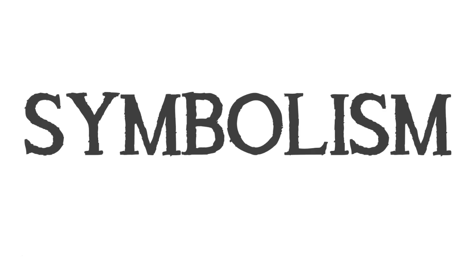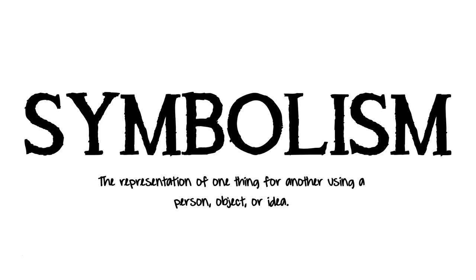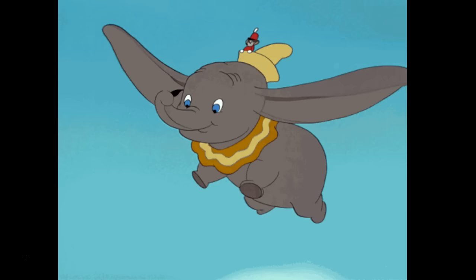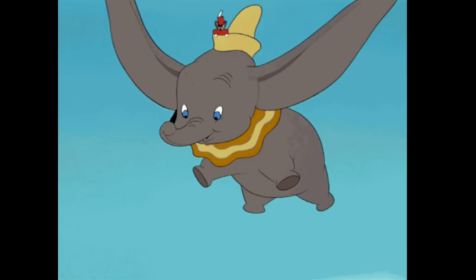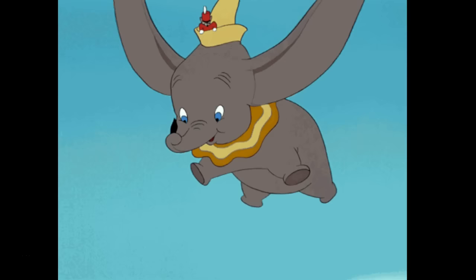Symbolism is something that at this point you probably know very well. When an author uses a symbol in a story, they're using an object to represent something else. We have symbols in our everyday life. For example, the feather that Dumbo holds in his trunk is a symbol for his bravery — his ability to take risks, try something, and overcome his obstacles. We know he doesn't really need the feather to fly; it's not magical, but it is a symbol for him.